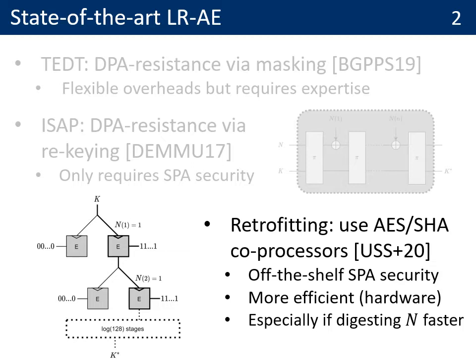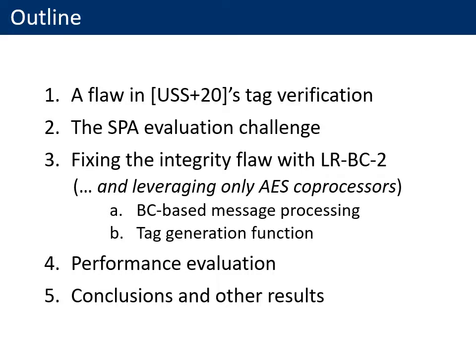And of course, if you have that, you can also make the scheme more efficient, especially if you are able to digest the nonce a bit faster. This leads me to the outline of the talk. First, I will describe a flaw in the tag verification of the Retrofitting paper. Then I will discuss the challenge of obtaining SPA security on low-end devices, and especially the challenge of evaluating SPA security. Then Thomas will describe how we can fix the integrity flaw with a new mode of operation called LRBC2. Finally, I will discuss performance, conclusions, and other results.